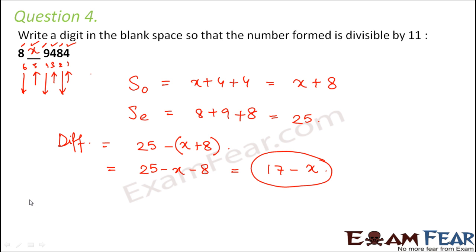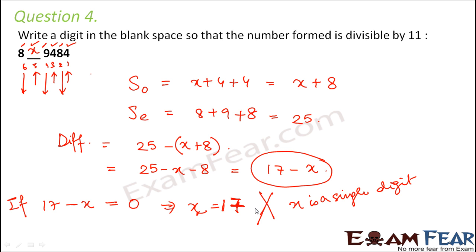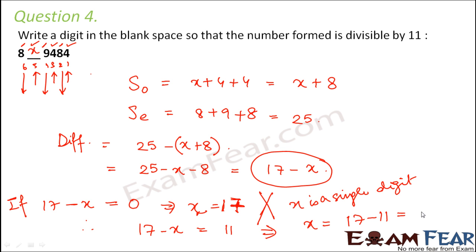Let us check the first case: if 17 minus x equals 0, then x would be 17. But x is a single digit number, so this is not possible. That means 17 minus x has to be a multiple of 11. After 0, the next multiple of 11 is 11, so 17 minus x equals 11, which means x equals 17 minus 11, equal to 6. So 6 would be the answer — the value of x is 6.